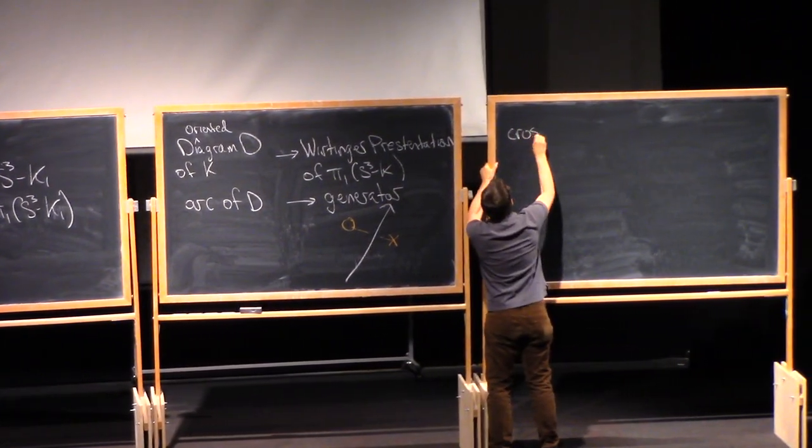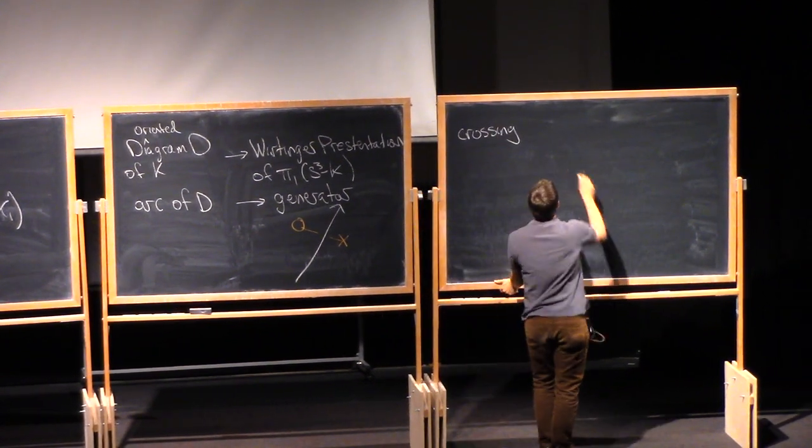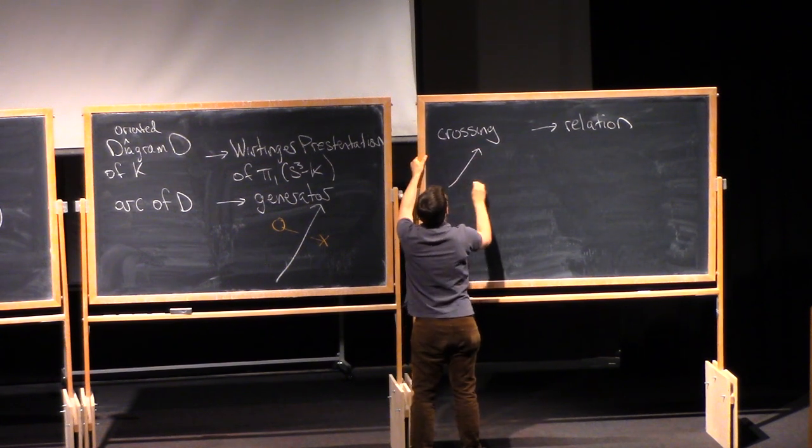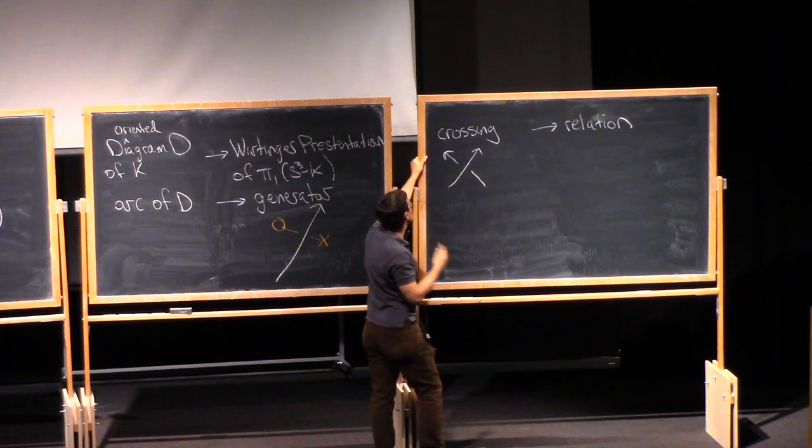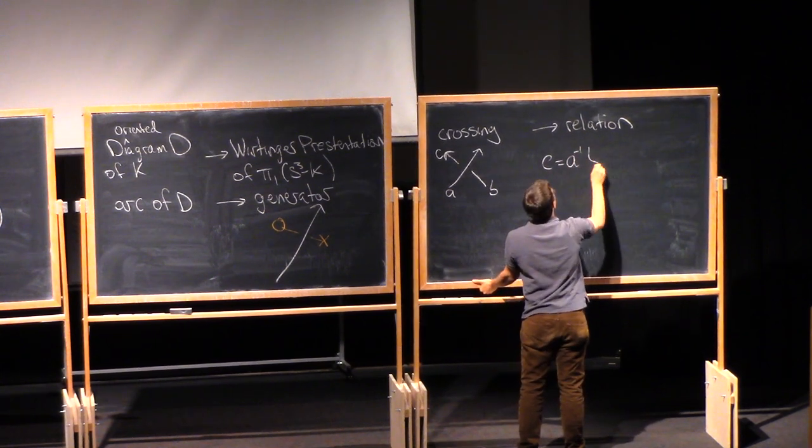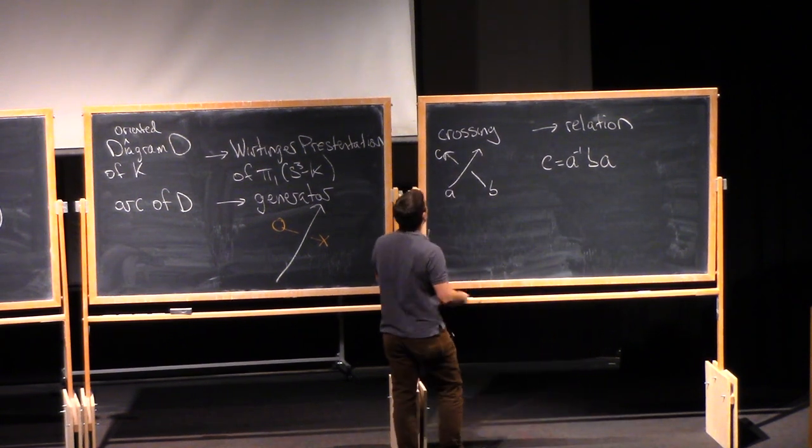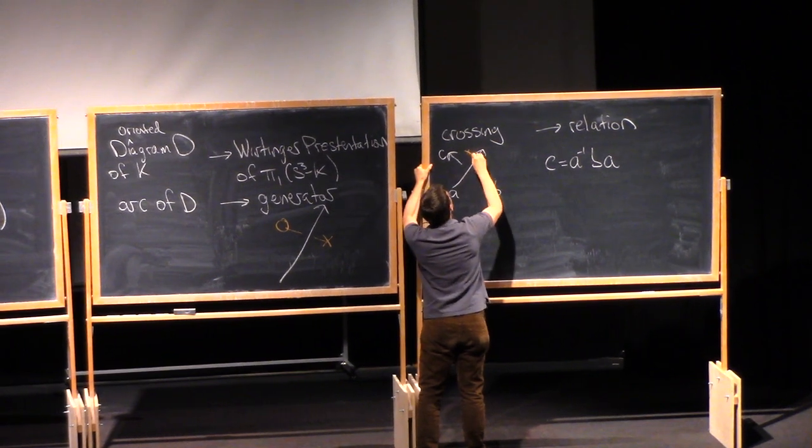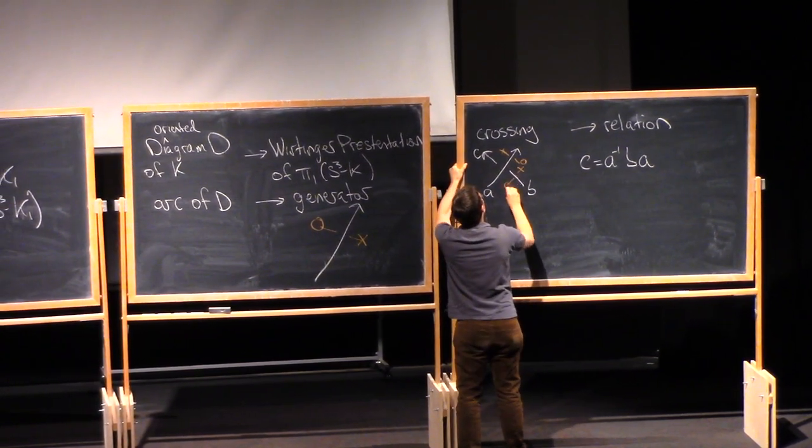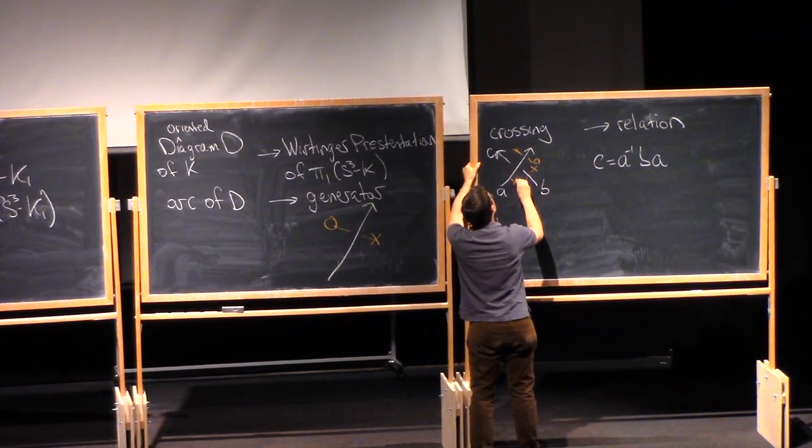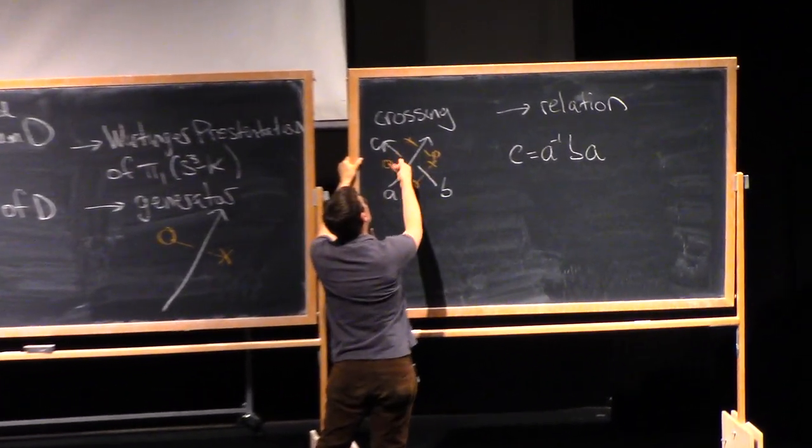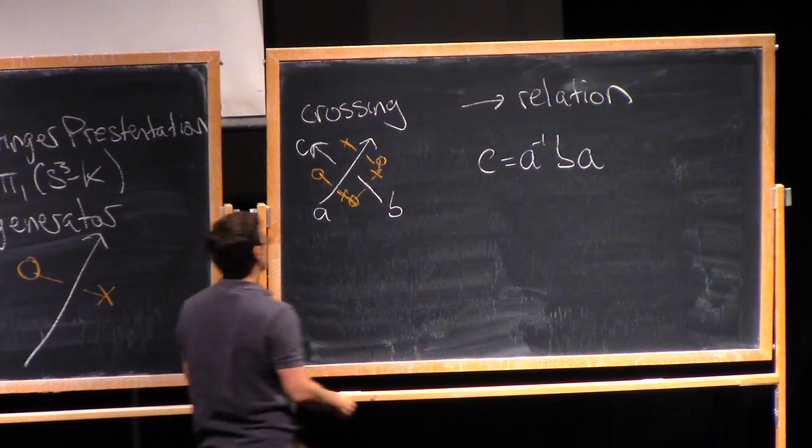And so for every crossing, I get a relation in this presentation. So for example, if I have a crossing that looks like this, there are three arcs of the diagram here. I'll call them A, B, and C. Then I get the relation that says that C is A inverse BA, I think. And the way that I check that is, well, so I do A inverse. I come in from infinity. I go underneath here, come out. Then I do B. That's going to carry me around like this. I come out and go back to infinity. And then I go A, so it's going to take me like this, go underneath here, and come out.